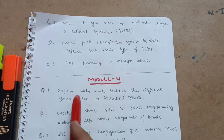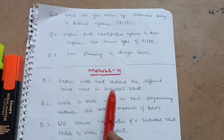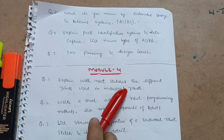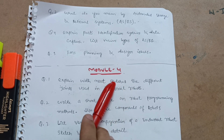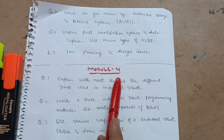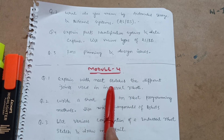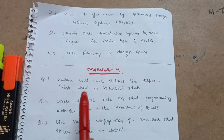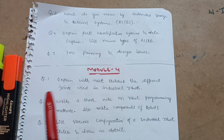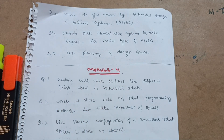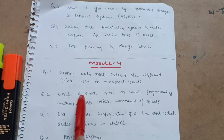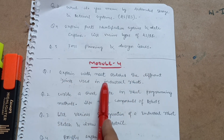Next is Module 4. The question is: explain with neat sketches the different joints used in industrial robots. Module 4 also has two chapters, and in the examination you will get questions from separate chapters — one is CNC (Computer Numerical Control) and the other is Robot Technology. I have taken questions from Robot Technology as it is the easier one. There is also a numerical part where you have to write G codes and M codes for turning and milling problems. If you are not comfortable with that, focus on Robot Technology, which consists of theoretical concepts only.